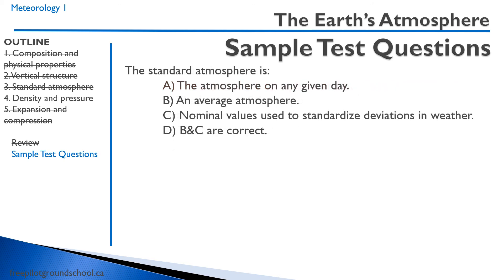The standard atmosphere is: A, the atmosphere on any given day — no, that's not correct, because the properties of the atmosphere change on a daily or hourly basis. B, the average atmosphere — yes, this is correct; if we average everything out, we get the average atmosphere. C, nominal values used to standardize deviations in weather — that is also correct. And D, B and C are correct. So the correct answer is D — B and C are both correct.